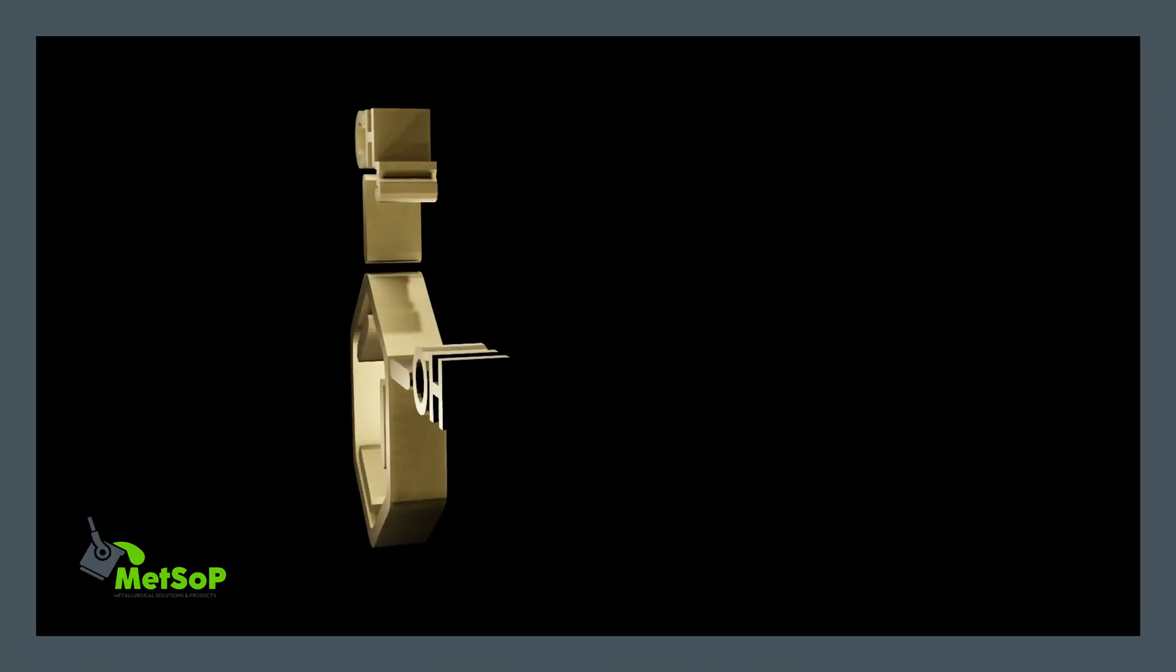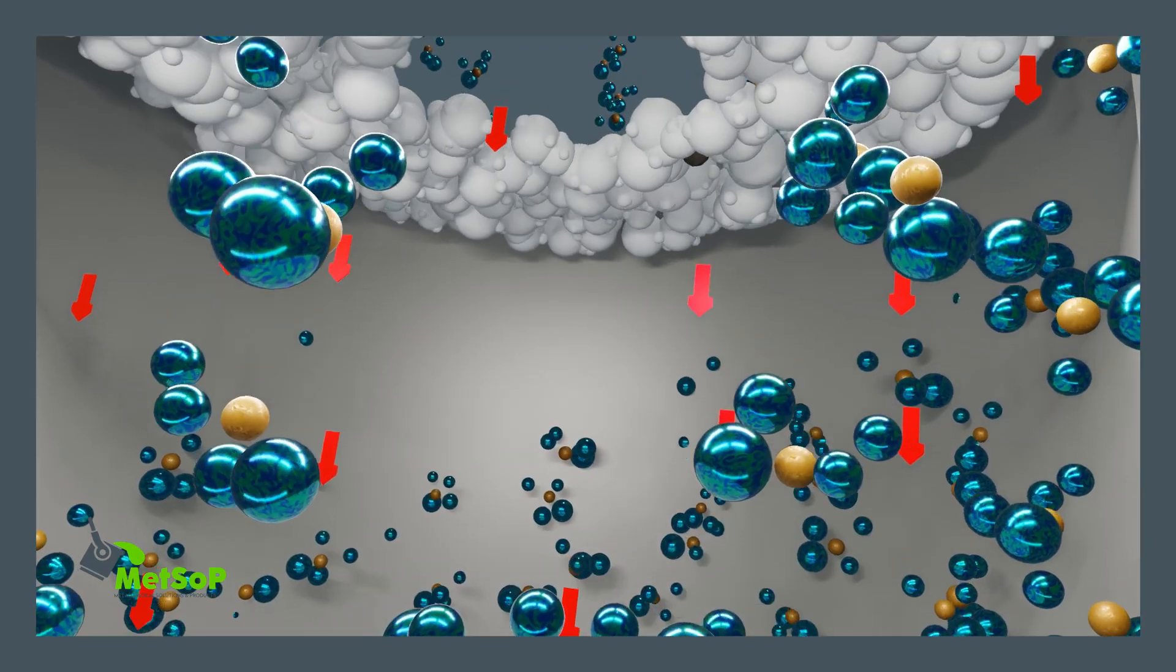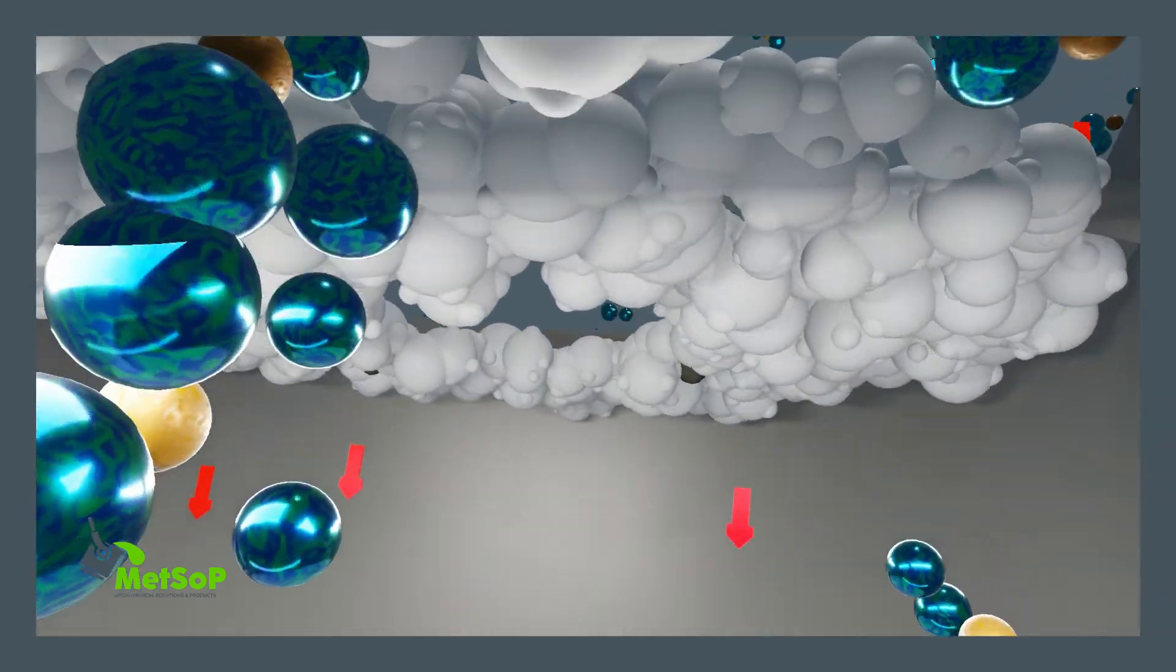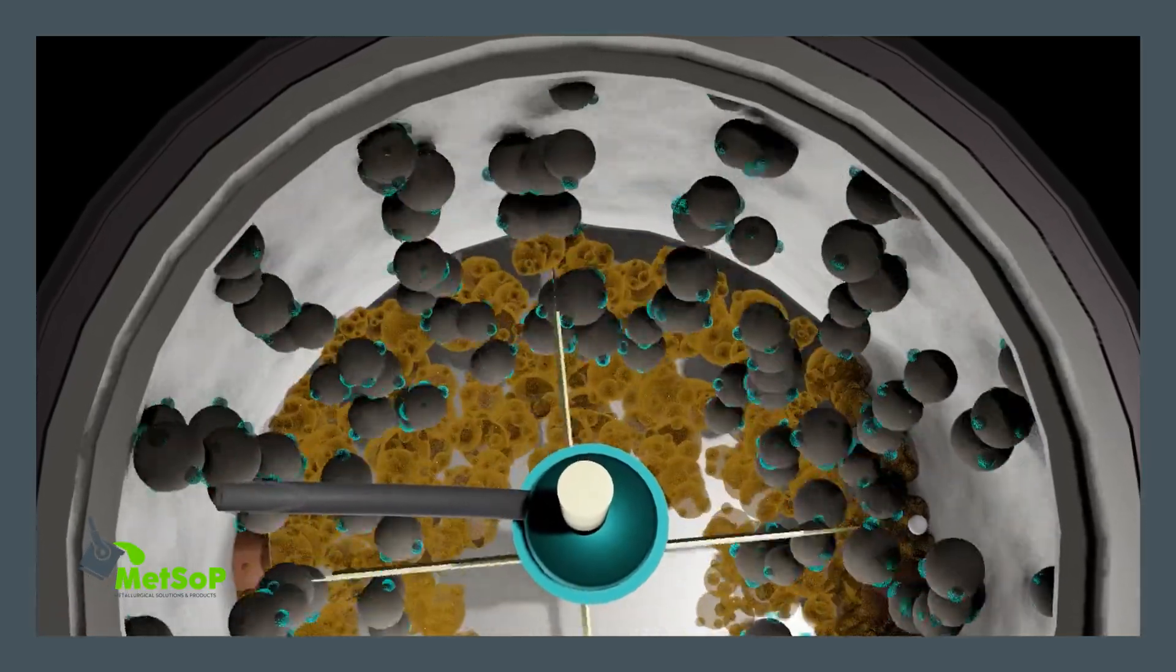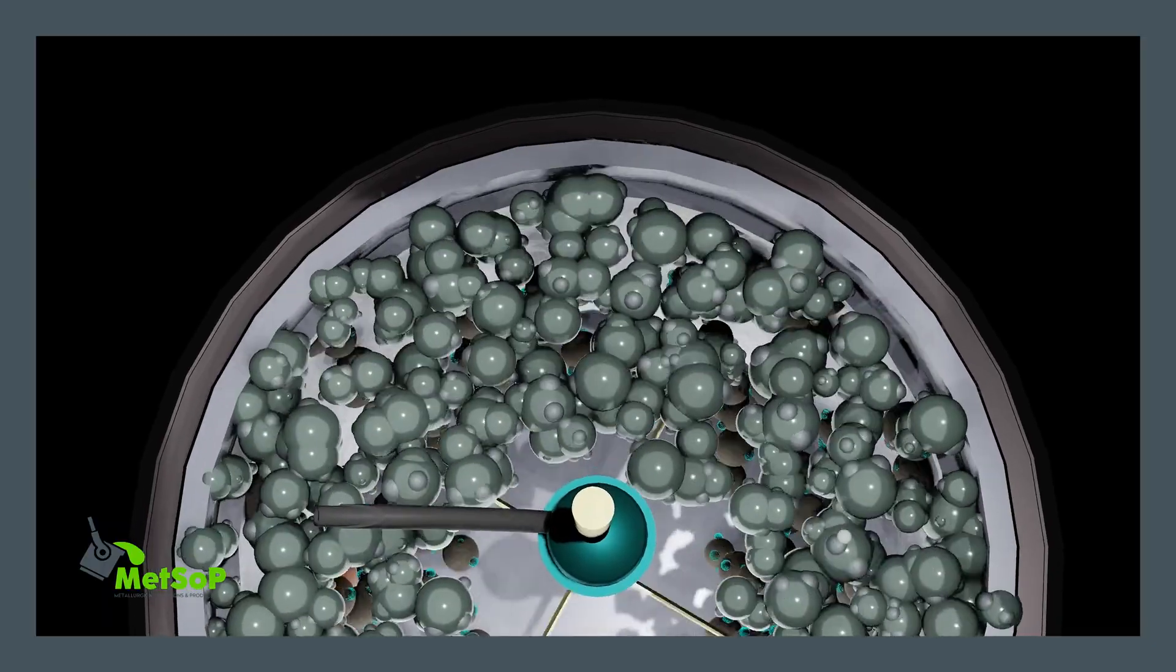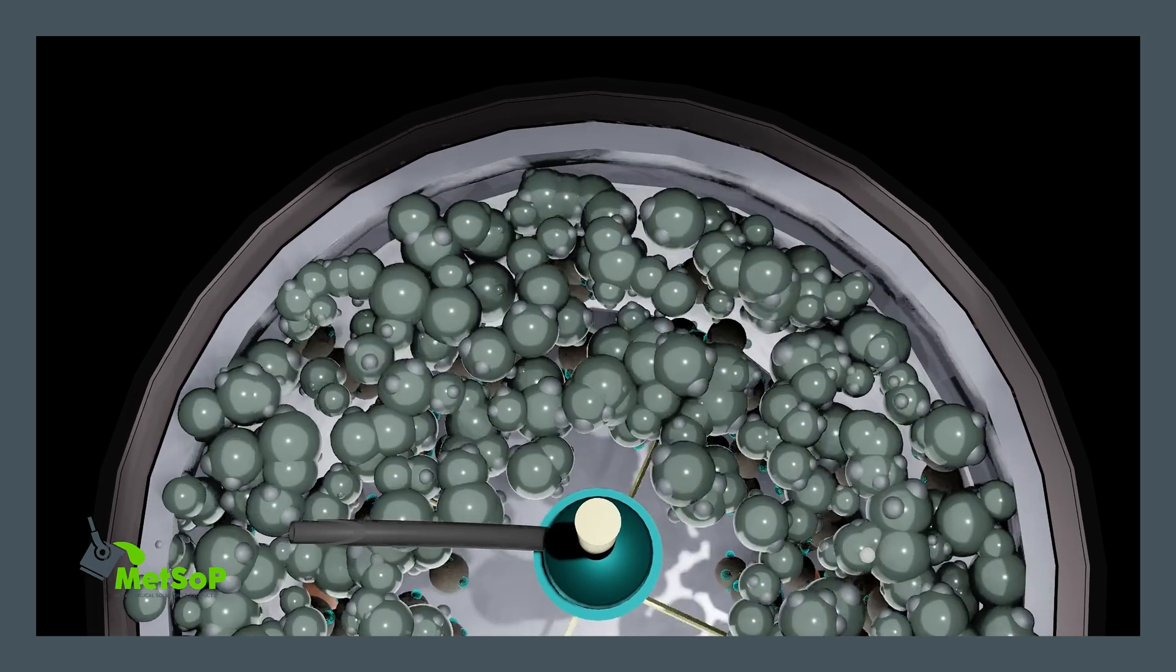Frothers create a stable froth layer by reducing the surface tension of the water, allowing small air bubbles to form. This stable froth traps hydrophobic mineral particles, making it easier to skim them off for further processing.